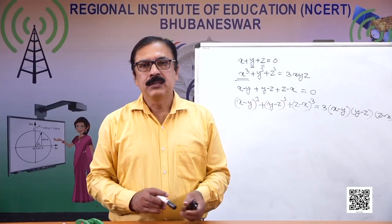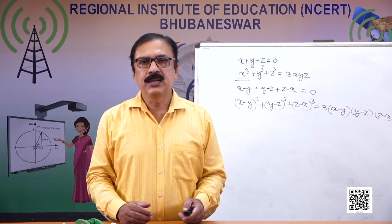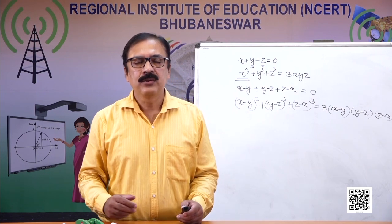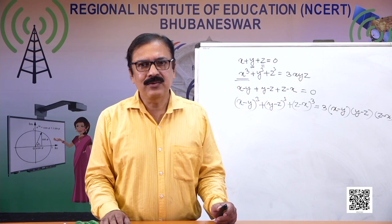Today we learned about different identities. The first four were studied in earlier classes. Today we learned about (x + y + z)², (x + y)³, (x - y)³, and x³ + y³ + z³ - 3xyz, and we efficiently used them in some problems. Thank you, dear students.